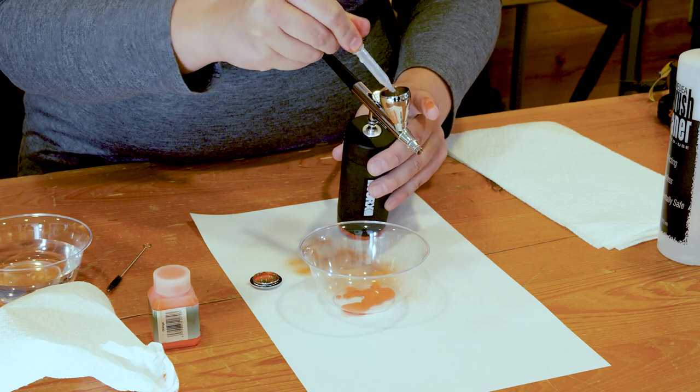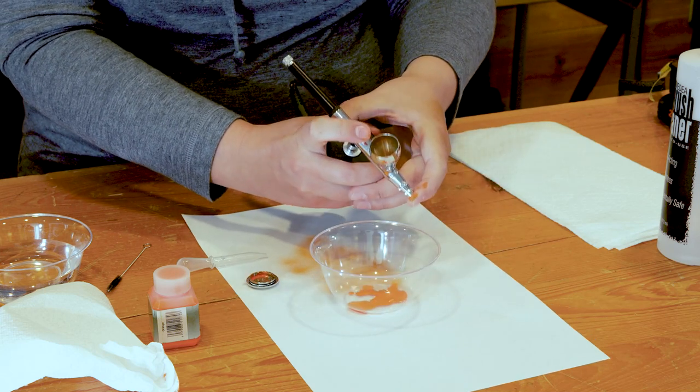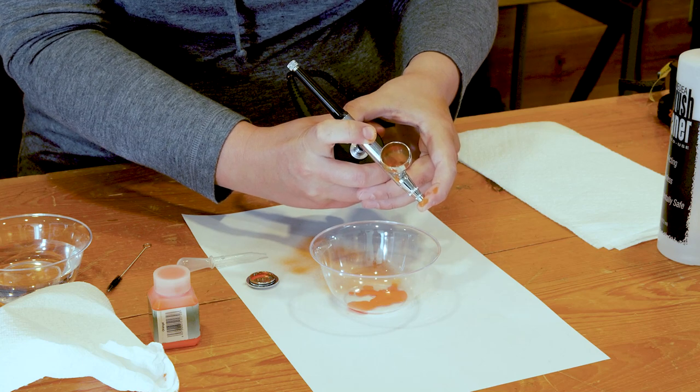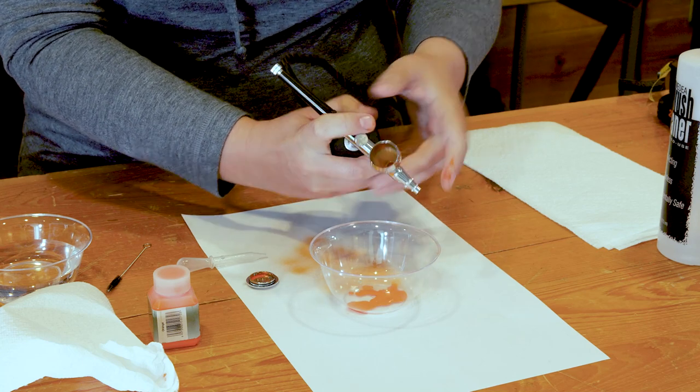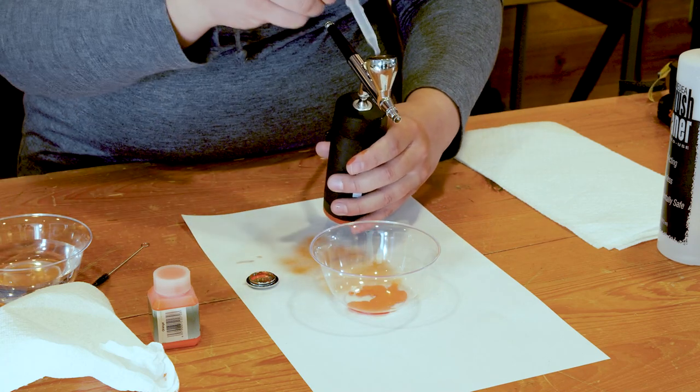This is cleaning out the cup, the paint needle, and the nozzle tips. So again, push down, pull back, let it bubble up a little, pour it out. You're going to want to do this until your water runs mostly clear.